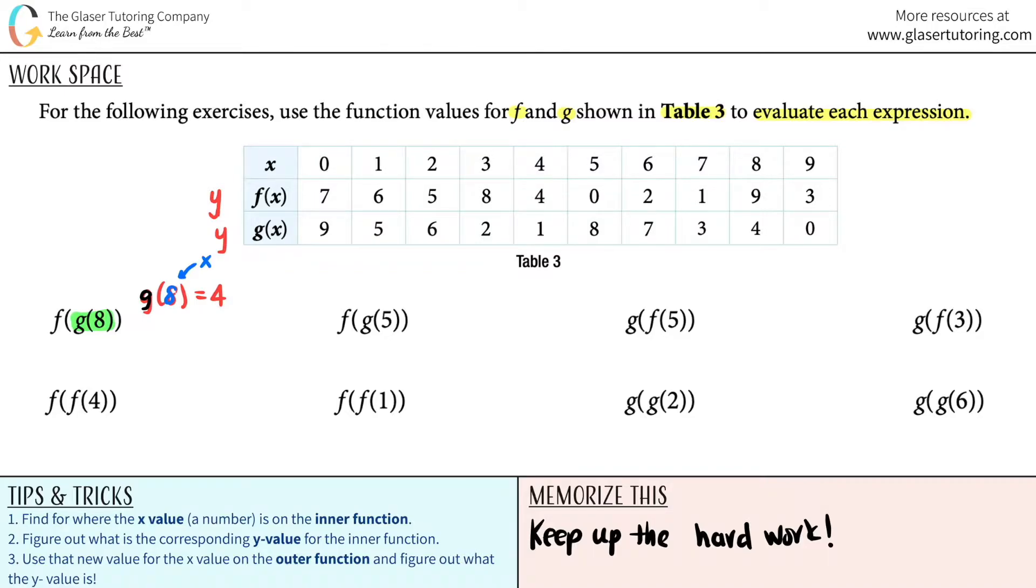Now we're ready to go to the outer function. The outer function here was f, and what's the number that I'm going to plug in? Well, over here it says we're going to use that new value that you solved for for the x on the outer function and figure out what the y is. So this number 4 is now turning into the x value for the f function. So now I got to look. x equals 4. What's the corresponding y function for the f graph? It is 4. And that's it. That's the answer to the first one.